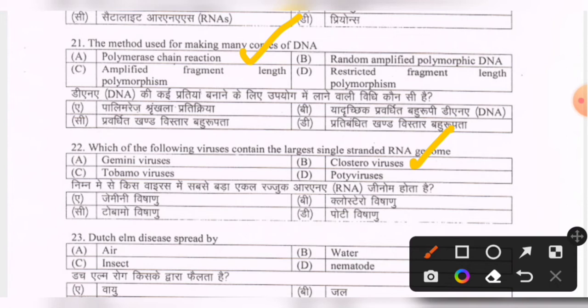Next question: Dutch elm disease is spread by — options are water, insect, nematode. The correct option is C — they are spread by insects.